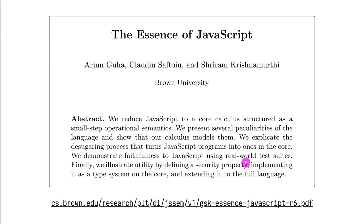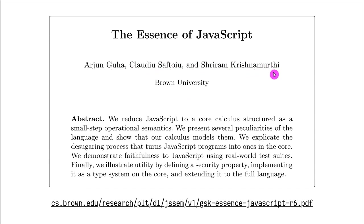Today I want to talk about the essence of JavaScript, the paper we're using as a guideline for our implementation of taking simple JS and converting it into Lambda JS. The essence of JavaScript was created by three authors: Arjun Guha, Claudio Stafui, and Sriram Krishnamurthy, all from Brown University.